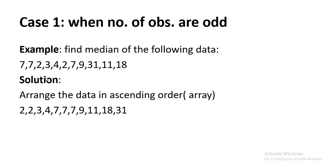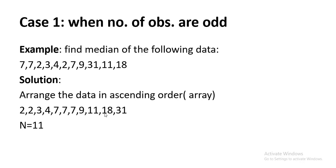After arranging, the data goes from the least value of 2 to the highest value of 31: 2, 2, 3, 4, 7, 7, 7, 7, 9, 11, 18, 31 — wait, counting gives us n = 11 observations: 1, 2, 3, 4, 5, 6, 7, 8, 9, 10, 11.